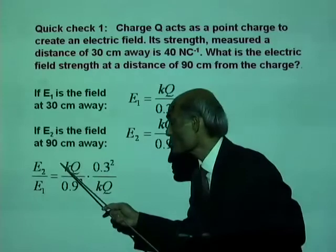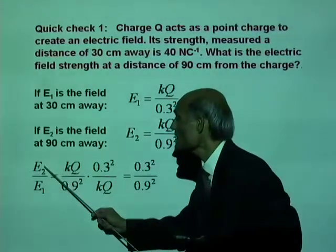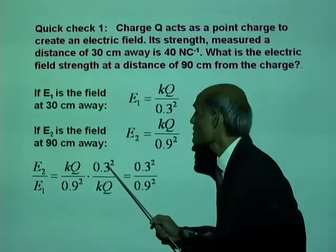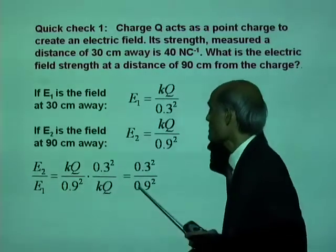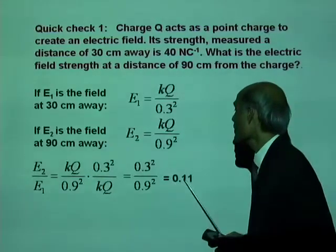What's the advantage? You can see now KQ and KQ will cancel. So E2 over E1 is 0.3 squared divided by 0.9 squared. And that is 0.11.